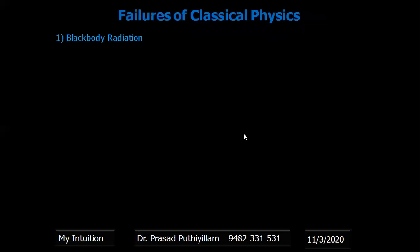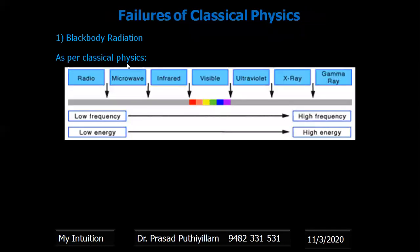There are three main failures of classical physics. The first one is with blackbody radiation. As per classical physics, as the frequency increases, the energy is also increasing. So from radio wave to microwave, and when it goes to gamma ray, the frequency increases.